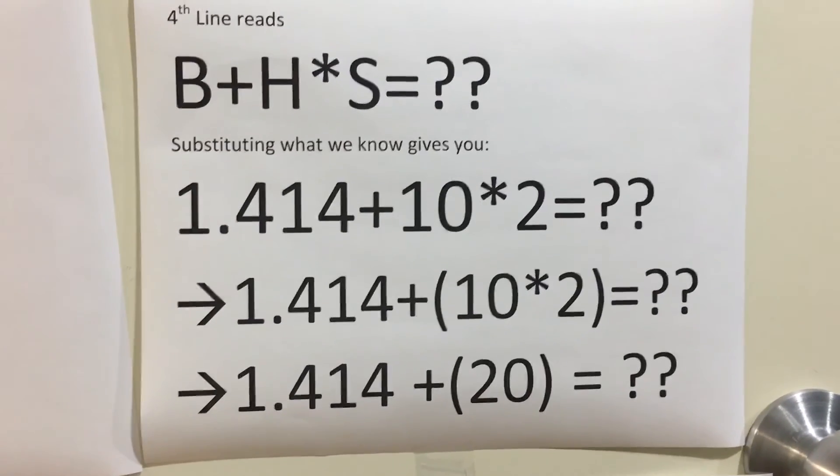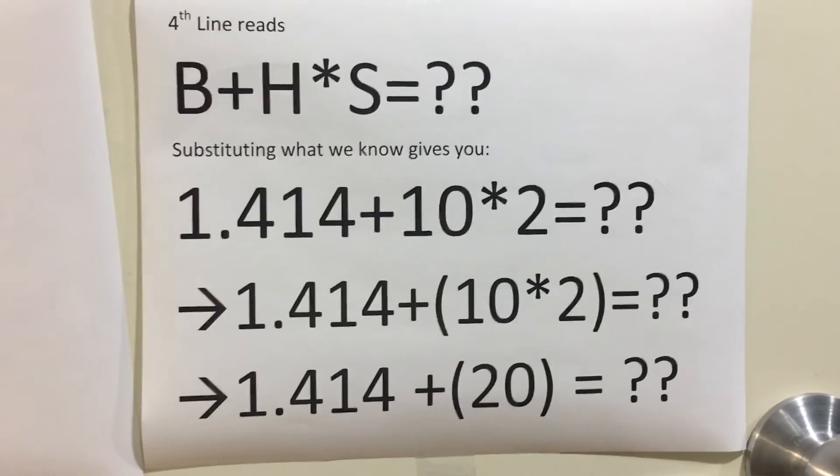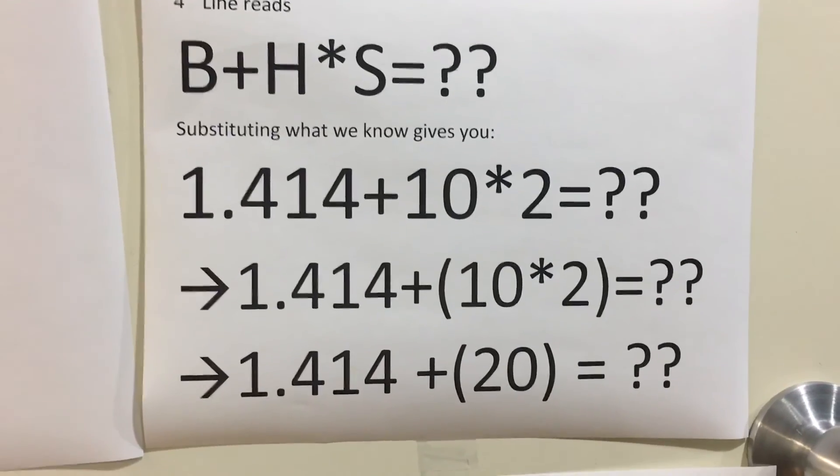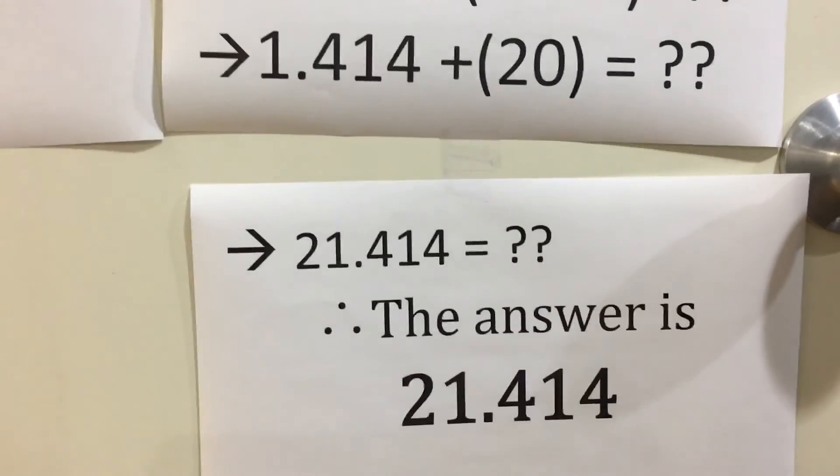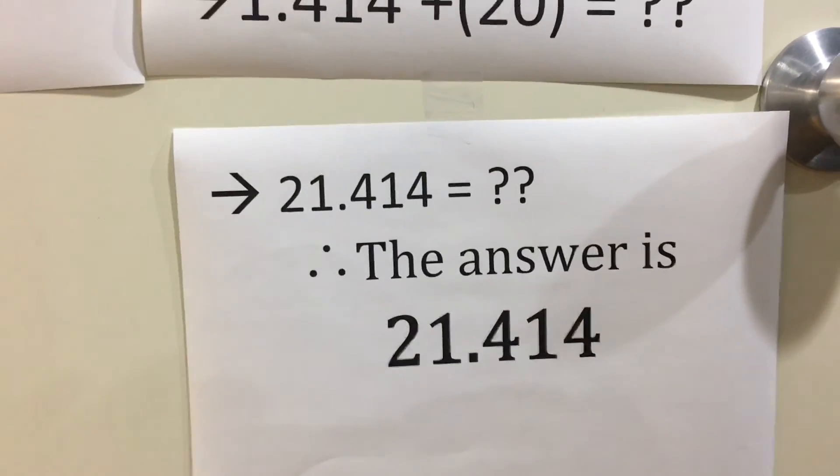With the order of operations, we do the multiplying first, so that comes to 20. Add the 1.414 and your total is 21.414. That's the correct answer to this riddle.